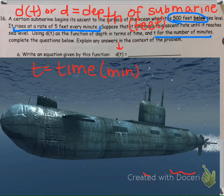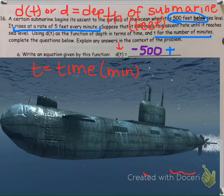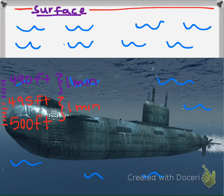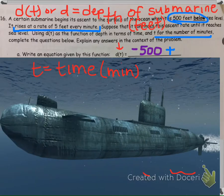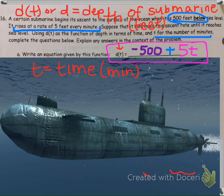So if the submarine is under the water, it's currently negative 500 feet. And then it's going to move up, so plus 5 feet every minute. If it goes up 5 feet and we keep adding 5, that's the same as multiplying by how many minutes. So our equation is D of T equals negative 500 plus 5T. That models the depth of the submarine as it moves up to the surface.